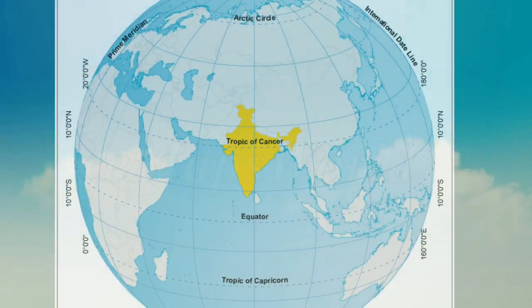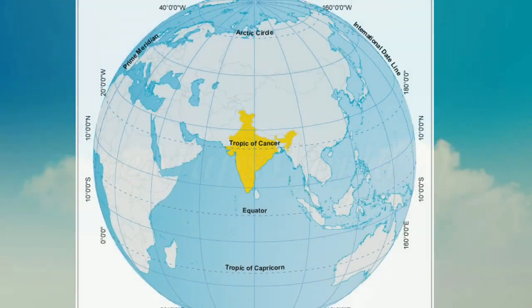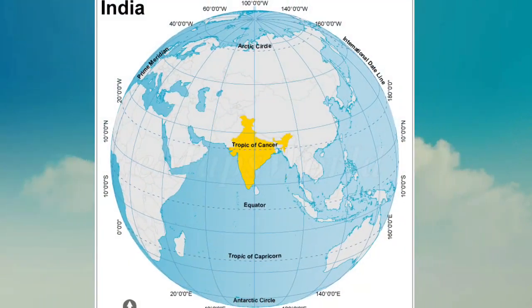India lies between latitude 8 degrees 4 minutes north and 37 degrees 6 minutes north, and longitude 68 degrees 7 minutes east and 97 degrees 25 minutes east. The distance from north to south is 3,214 kilometers and from east to west is 2,933 kilometers. Its coastline is 7,516.6 kilometers long, including the Andaman and Nicobar and Lakshadweep Islands.